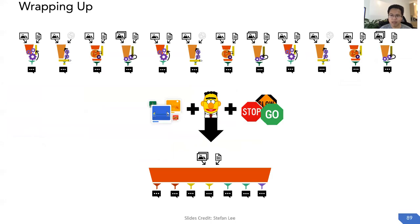To wrap up, in this talk we present three techniques that enable multi-task learning in vision and language. First, the ViLBERT model, which provides a unified architecture for different tasks. Second, a pre-training objective that learns visual groundings through noisy but large-scale webly-aligned data. Third, the Dynamic Stop and Go training scheduler, which effectively controls multi-task training. Our demos are available at vilbert.cloudcv.org. Thank you.